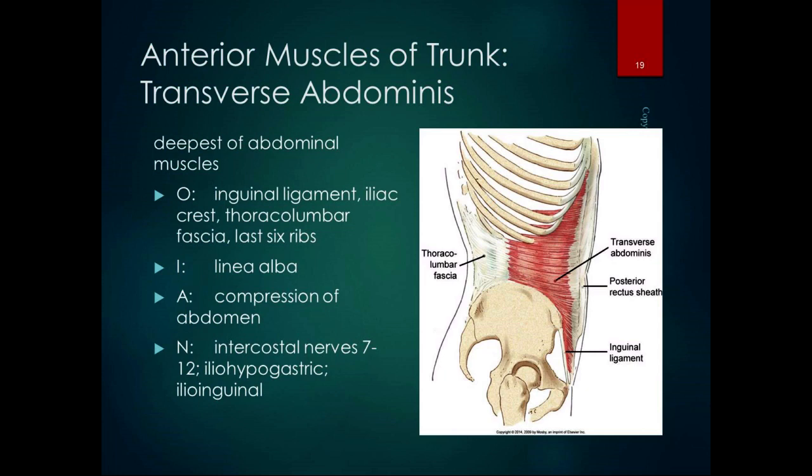When the transverse abdominis contracts, it compresses the abdomen like tightening a corset. When your Pilates teacher tells you to 'core up,' you're tightening your transverse abdominis and stabilizing. It is a huge stabilizer muscle. We train it a lot in PT because many people do not use their transverse abdominis — they just wear it. We want to train people to use it to stabilize their spine. It's innervated by intercostal nerves, iliohypogastric, and ilioinguinal nerves, and it's a big player in spinal stabilization.